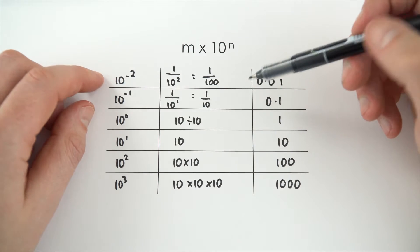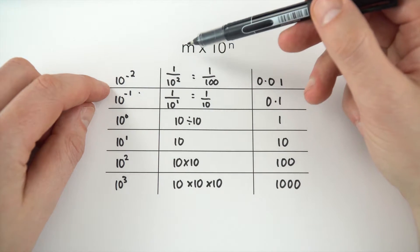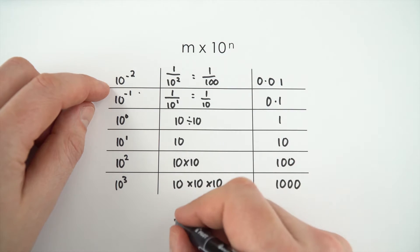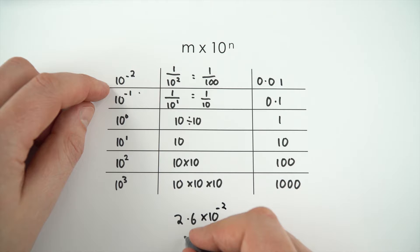So this is why when you have a negative number, it makes the thing that we're multiplying the number m by even smaller. So for example, if you had 2.6 times 10 to the minus 2, that's the same as saying 2.6 times 0.01, which is equal to 0.026.